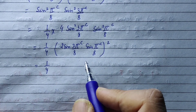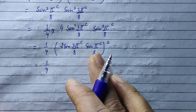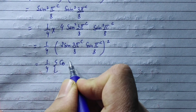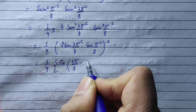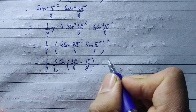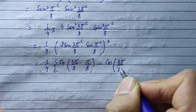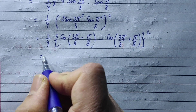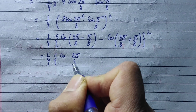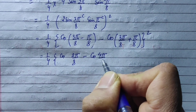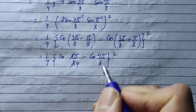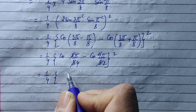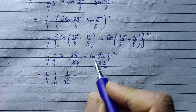Now applying the transformation of trigonometric formula: 2 sin(A) sin(B) = cos(A - B) - cos(A + B). So we get (1/4) × [cos(2π/8) - cos(4π/8)]², which is (1/4) × [cos(π/4) - cos(π/2)]². Cos(45°) = 1/√2 and cos(90°) = 0.